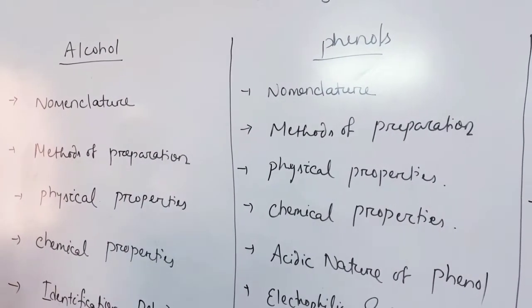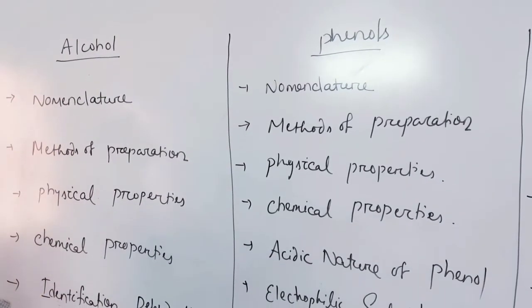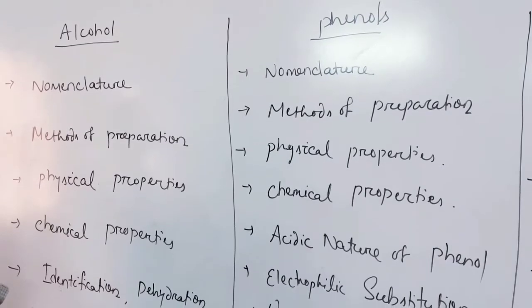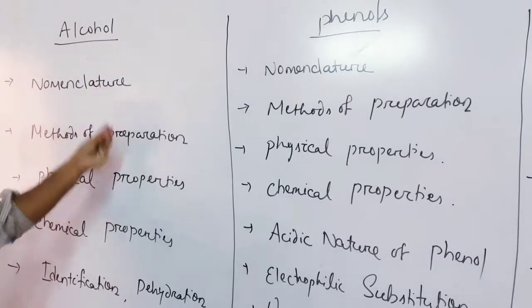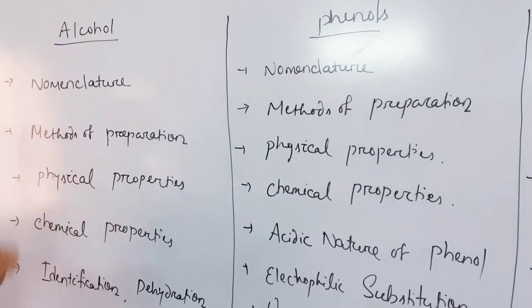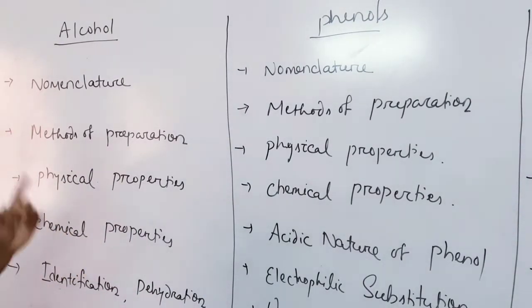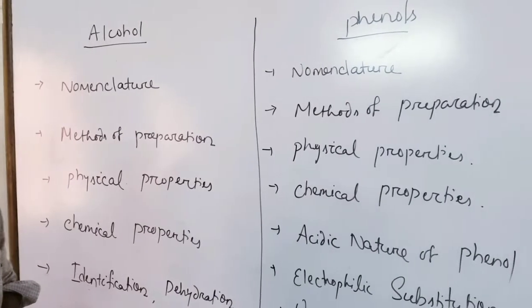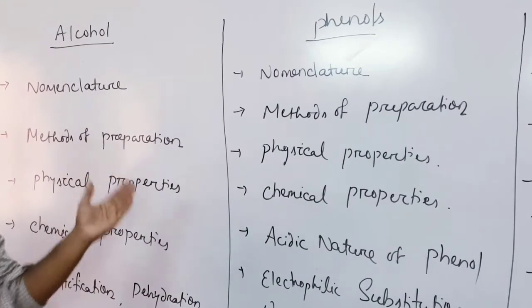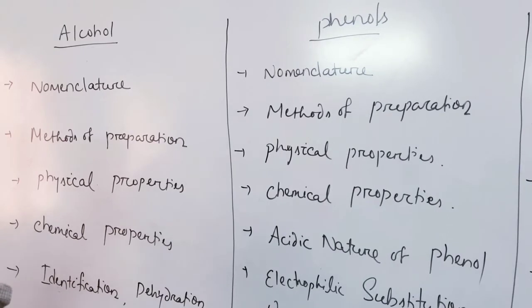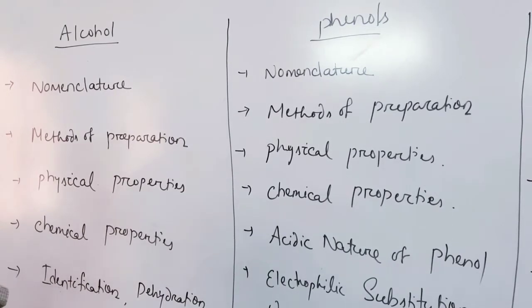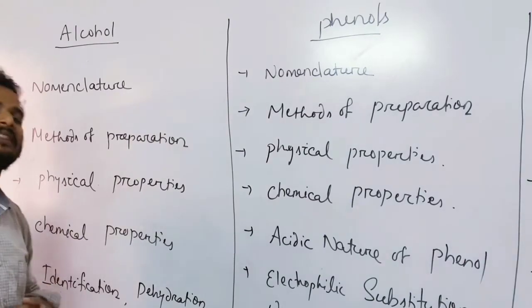First, we study nomenclature. Second, the method of preparation. Third, physical properties. Fourth, chemical properties and chemical reactions, including important phenomena. We also cover identification or distinguishing primary alcohol, secondary alcohol, tertiary alcohol, and finally the dehydration mechanism related to methanol and ethanol.